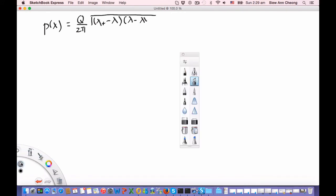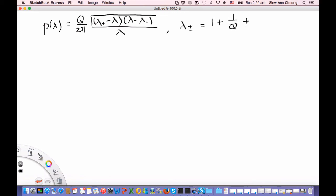And the key thing that you need to understand from this is how to compute lambda plus minus. The Pastor-Marchenko distribution is Q/(2π) * sqrt((lambda+ - lambda)(lambda - lambda-)) / lambda, where lambda+- = 1 + 1/Q +- 2/sqrt(Q).